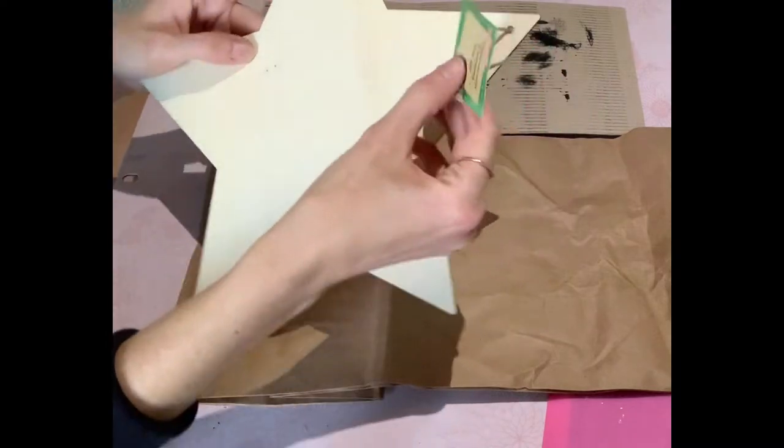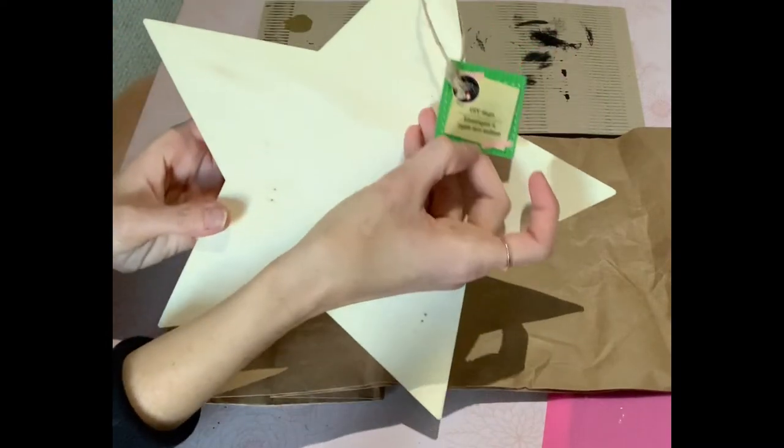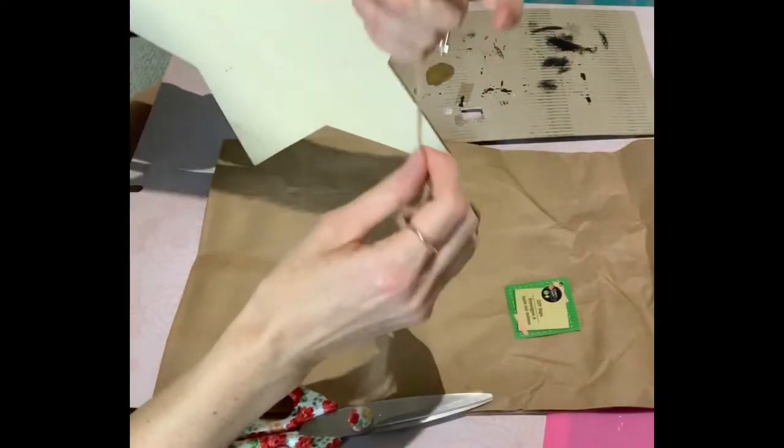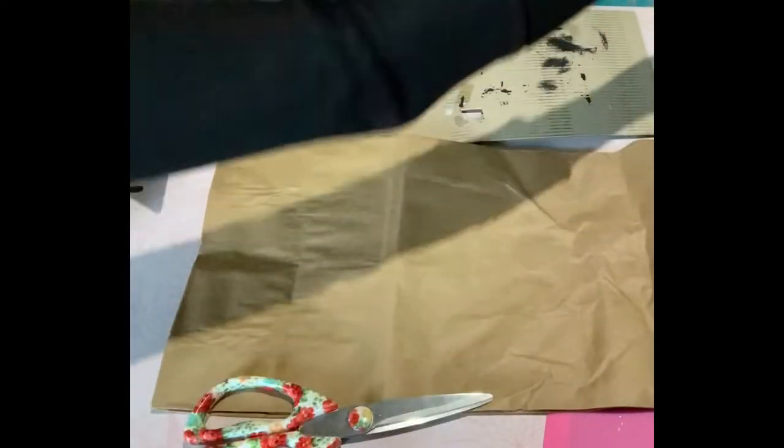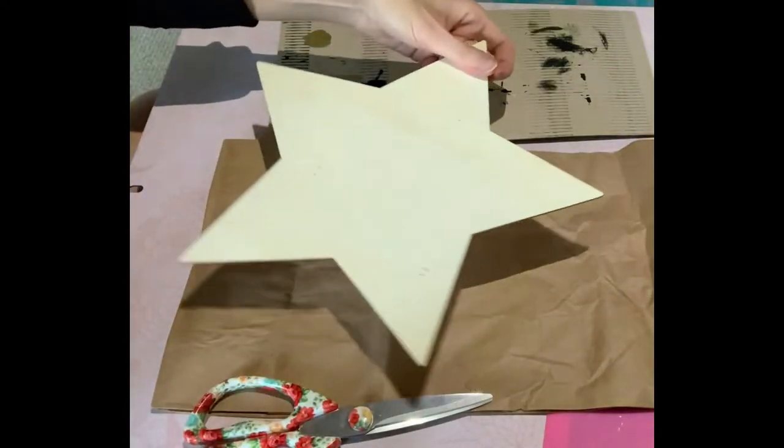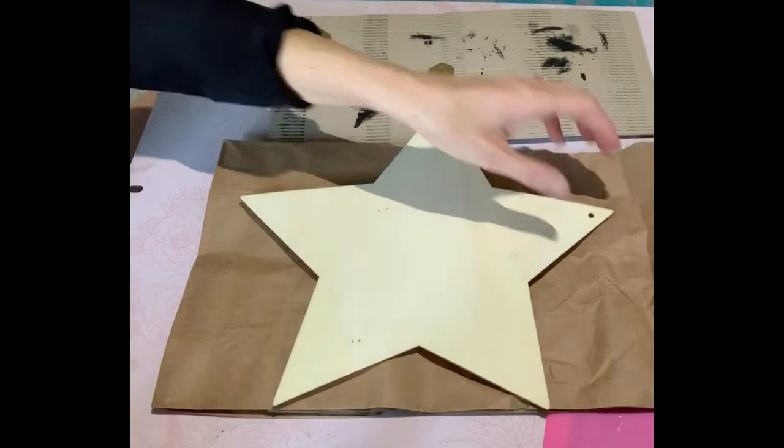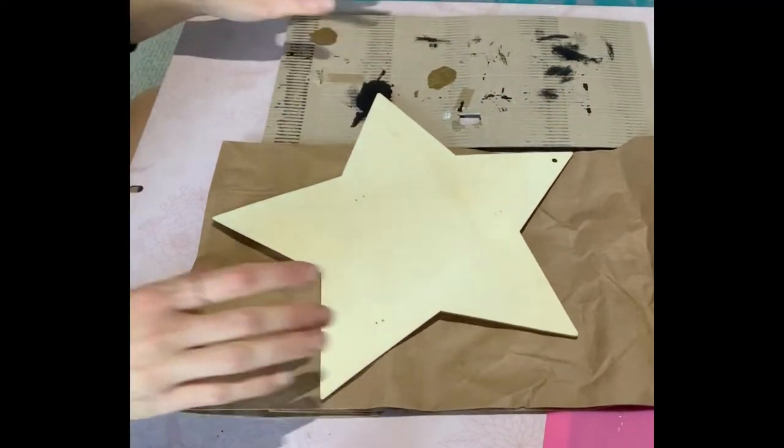For the first magic DIY, I'm taking this wooden star from the Dollar Tree, removing the jute twine that comes with it, and giving it one coat of acrylic paint using the Deco Art from Dollarama in Silver Lining.